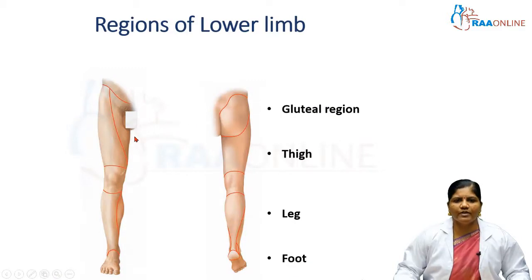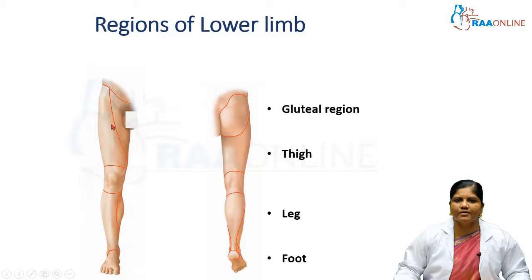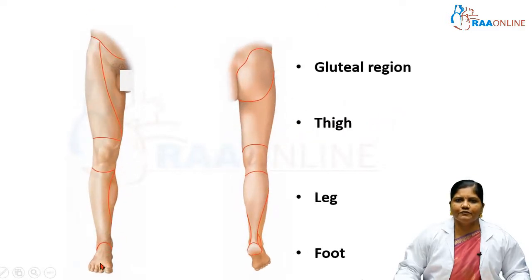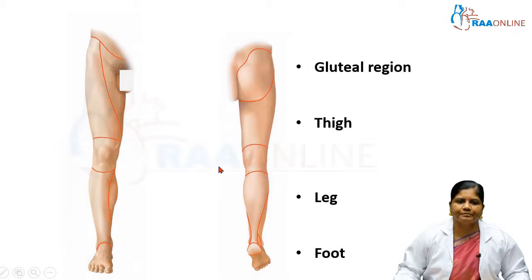The lower limb is subdivided into many regions. The area between the hip joint and the knee joint is called the thigh region. The part between the knee joint and the ankle joint is called the leg. Beneath the ankle joint is the foot. The disposition of the lower limb is vertical up to the ankle joint, and horizontal at the foot area.